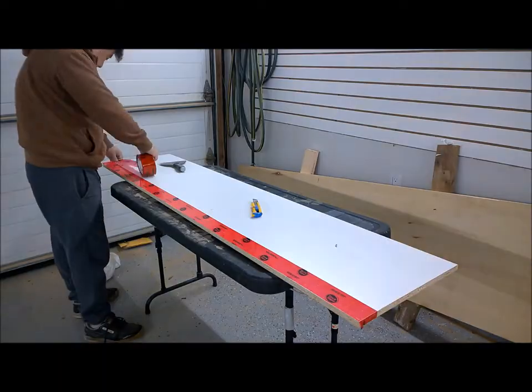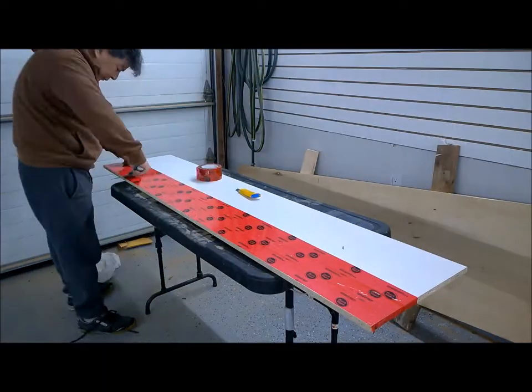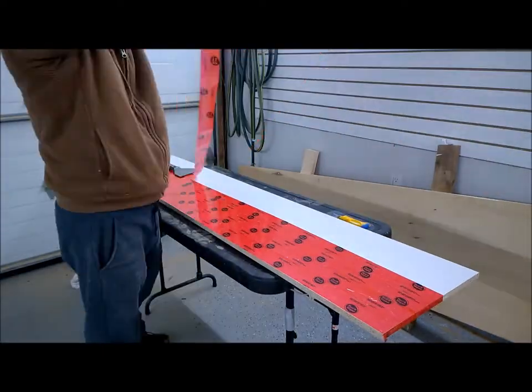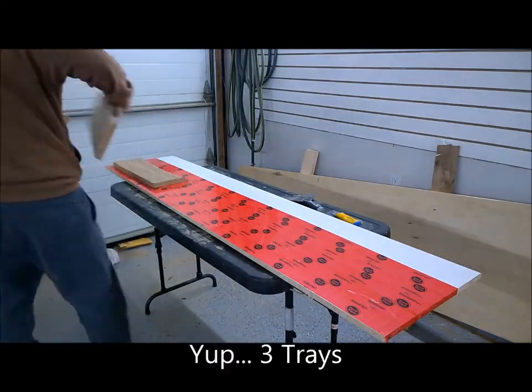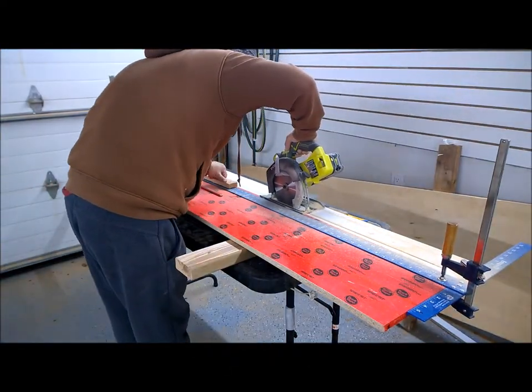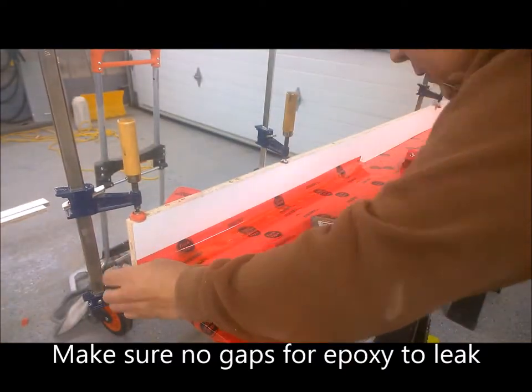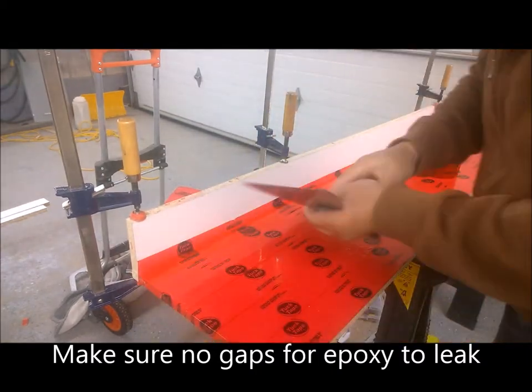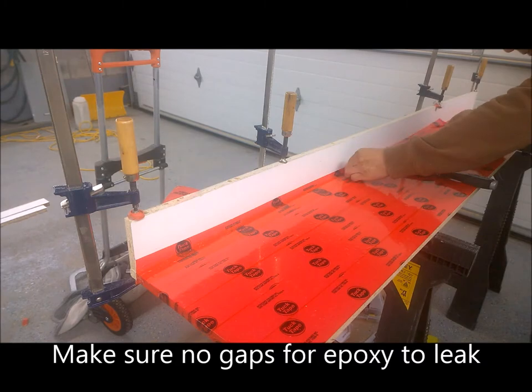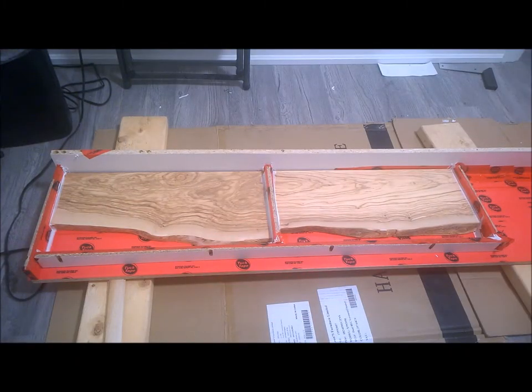Let's start by making the mold. I'm using MDF and this board should be big enough for three trays. I'm applying sheathing tape to prevent the epoxy from sticking to the mold. I think we're ready to go.